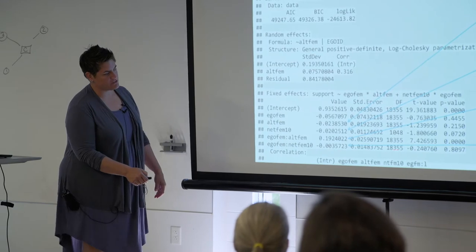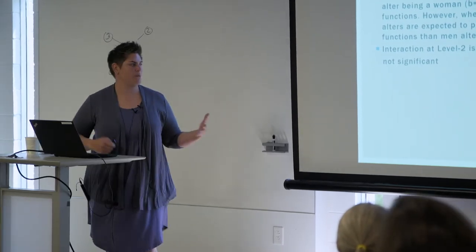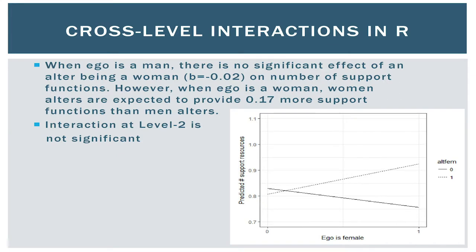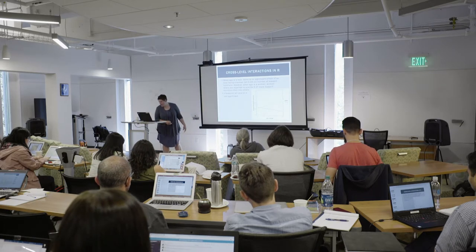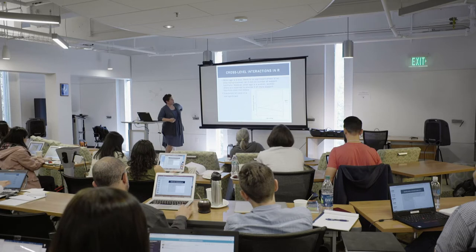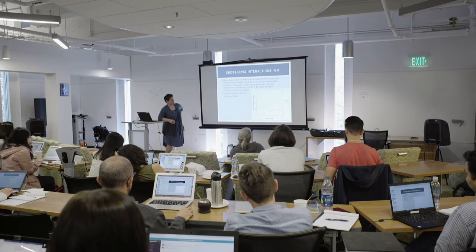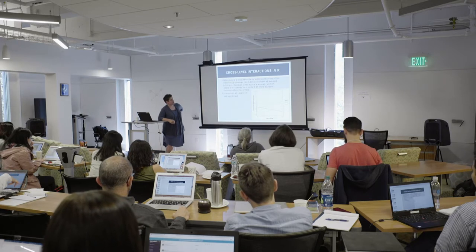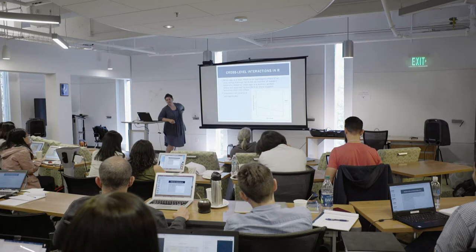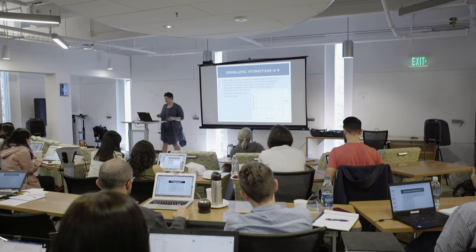It's much easier to conceptualize interactions with a figure. This here is the predicted number of support resources provided by each alter as a function of ego and alter gender. The dotted line is alter is a woman, the solid line is alter is a man. When ego is a man, there is no significant effect of an alter being a woman — both men and women provide the same amount of support to men. But when ego is a woman and the alter is a woman, there's a lot of support going on. When ego is a woman and the alter is a man, there's very little support happening. So there's a very strong interaction, similar to what we expected. That is statistically significant.